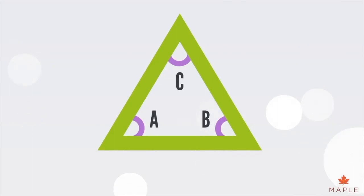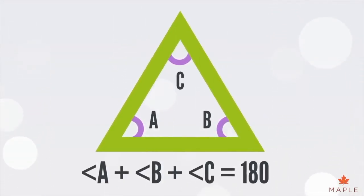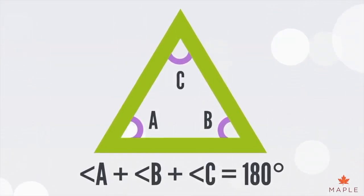In a triangle, the three interior angles always add to 180 degrees, which is the same as a straight line.